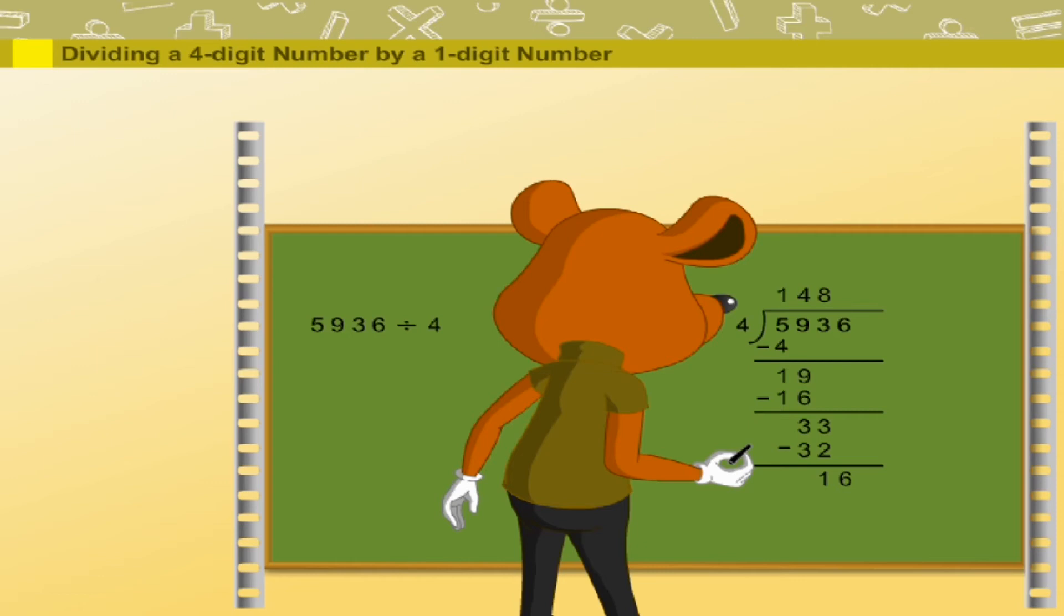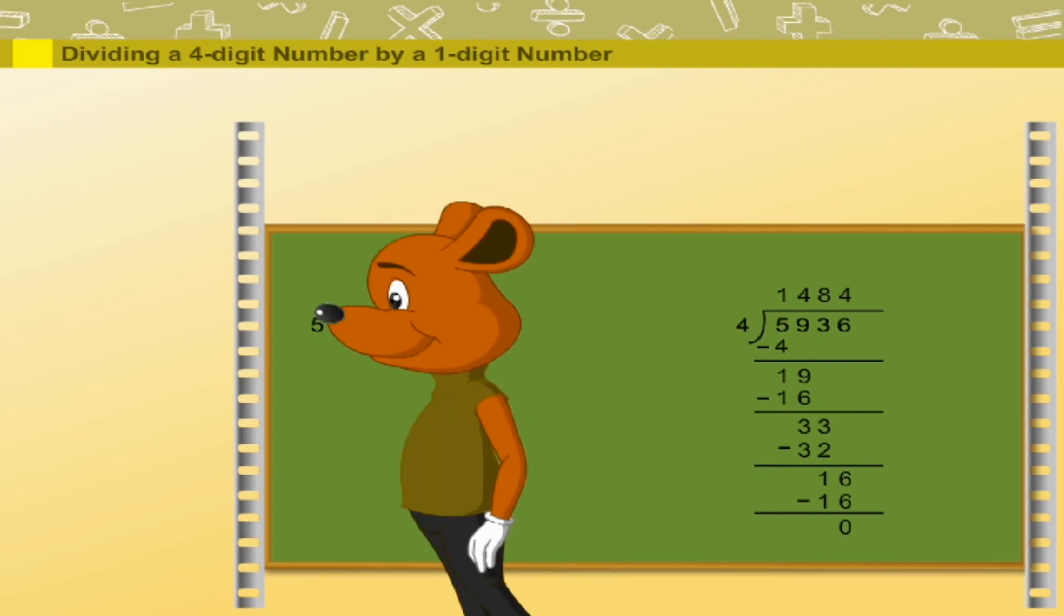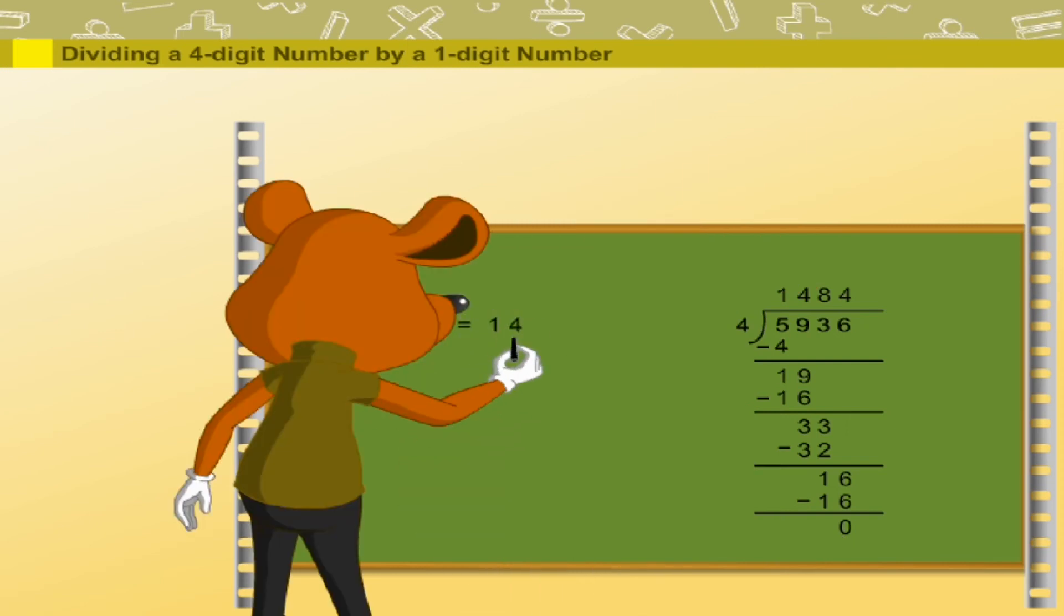Now, 4 divides 16 4 times. So, quotient 4 and no remainder. The answer is 1484.